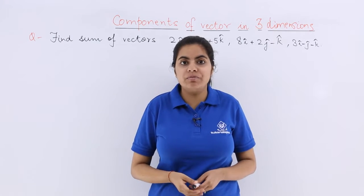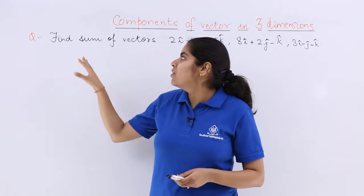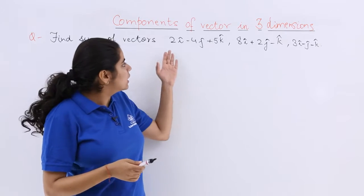This question is about components of vector in 3 dimensions. It says, find the sum of the vectors. So there are 3 vectors given.